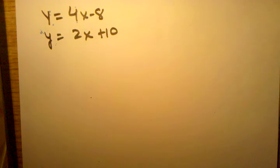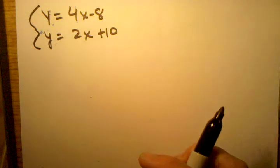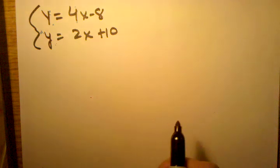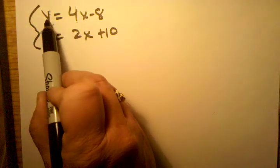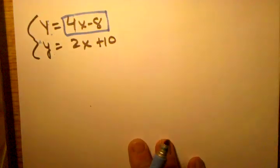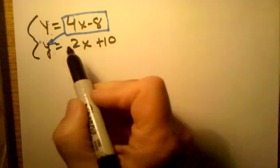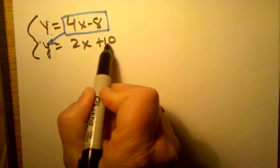And again, the thinking is, because this is called the method of substitution, I need to think, do I have information here in this system that's going to allow me to substitute something, some expression in for one of the variables. In this case, I have y equals 4x minus 8. If I want to, I can take the 4x minus 8 and I can substitute it in for this y.